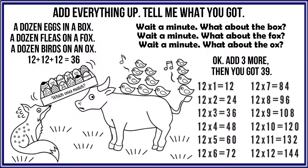Add everything up, tell me what you got: a dozen eggs in a box, a dozen fleas on a fox, a dozen birds on an ox. 12 plus 12 plus 12 is 36. Wait a minute — what about the box? Wait a minute — what about the fox? Wait a minute — what about the ox? Okay, add 3 more, then you got 39.